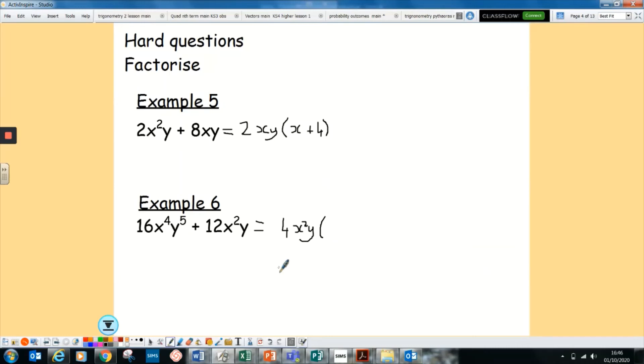Again, then check what you need to multiply. So 4 to your 16, you've got 4. To go from x² to x to the power of 4, you need x². Remember, you add your powers when you multiply them. And then to go from y to y to the power of 5, you need y to the power of 4. Plus 3 to get from your 4 to your 12. We've got the x² and we've got the y, so it's just a plus 3. There we go.